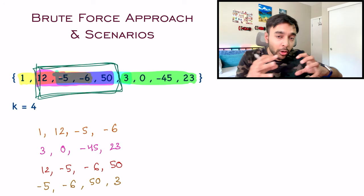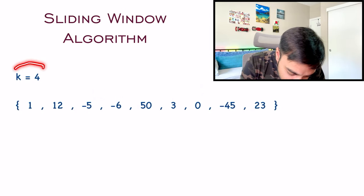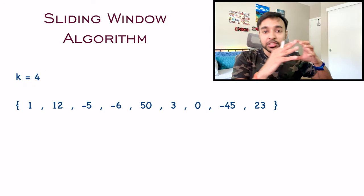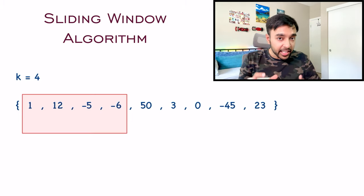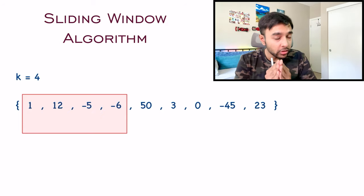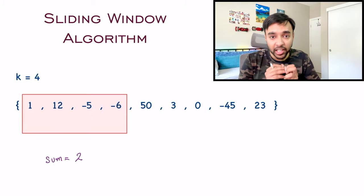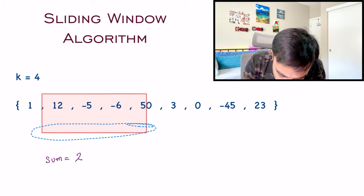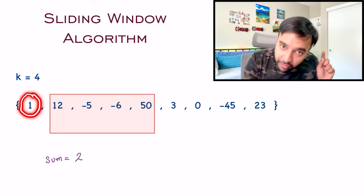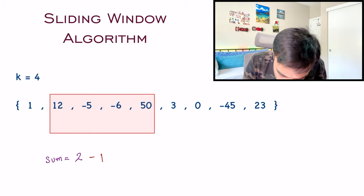In the sliding window algorithm, you define a window of size k — in this case, size 4. Currently the window contains the first 4 elements and the sum equals 2. As the name suggests, you literally slide this window one step ahead. What happens? You remove element 1 and add element 50. You apply the same change to your sum: remove 1, add 50. Your new sum is now 51.